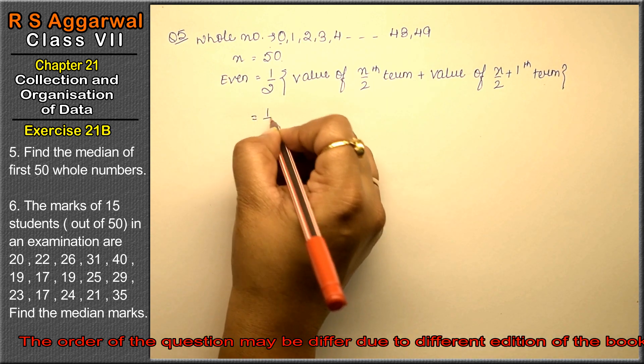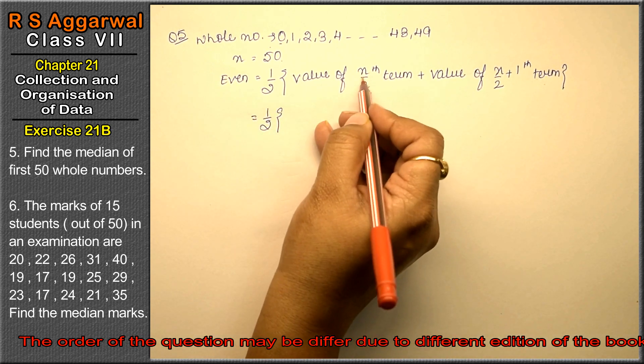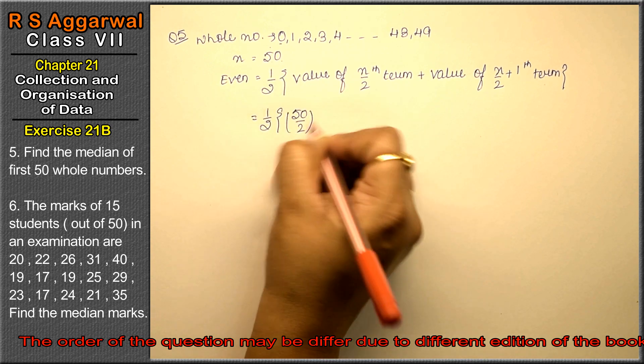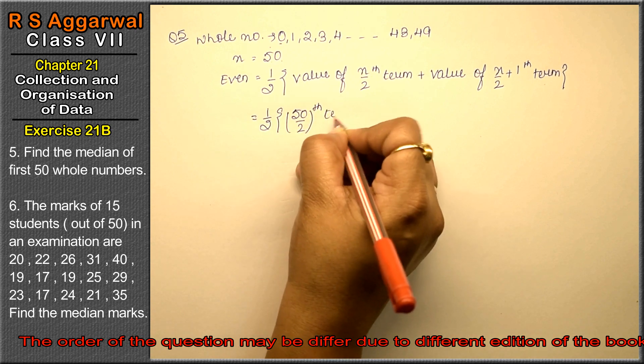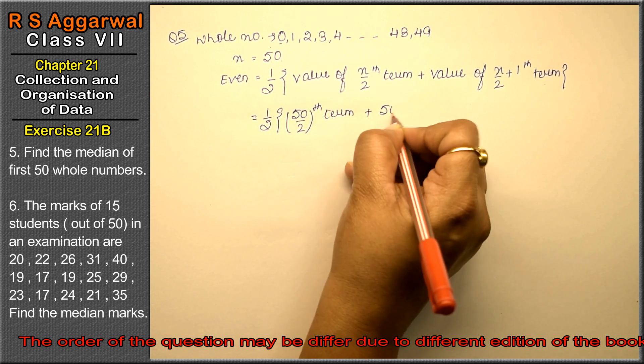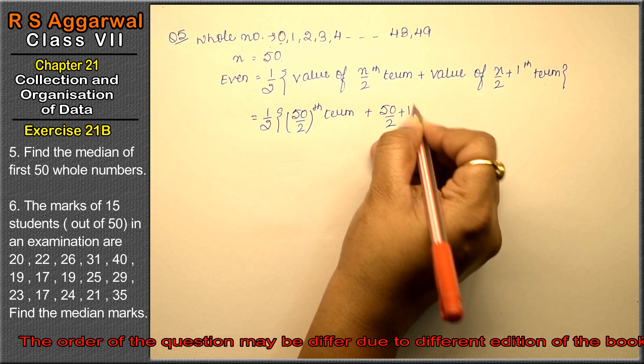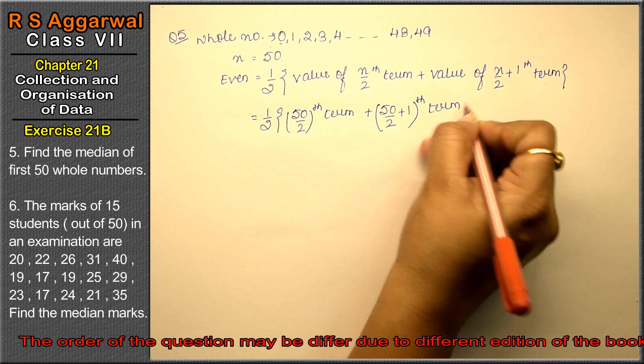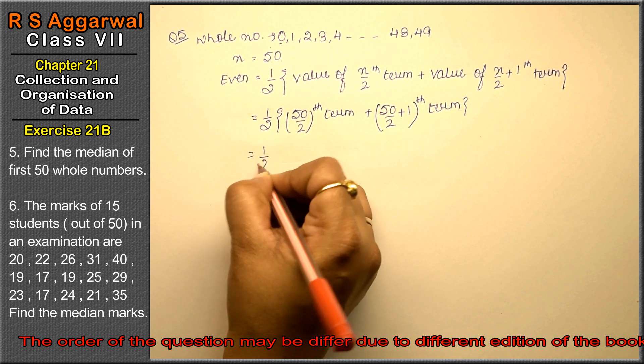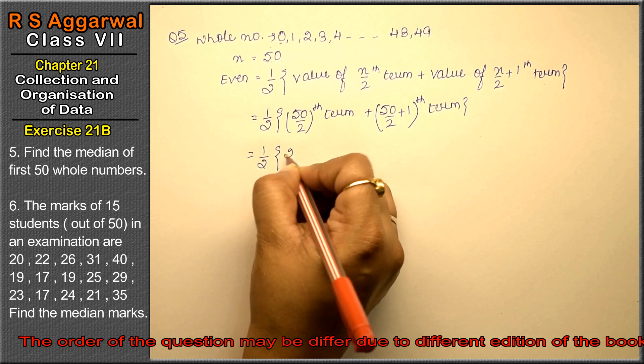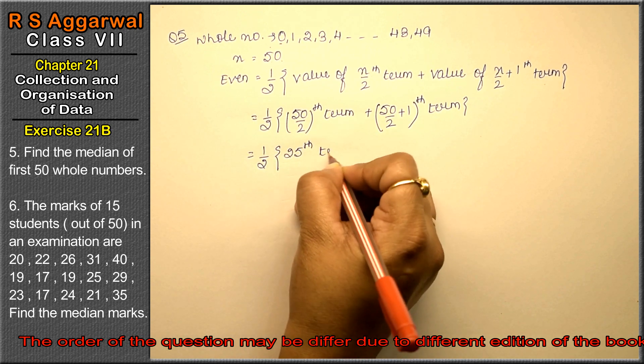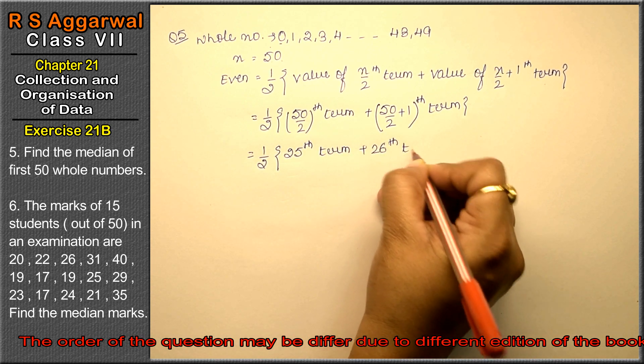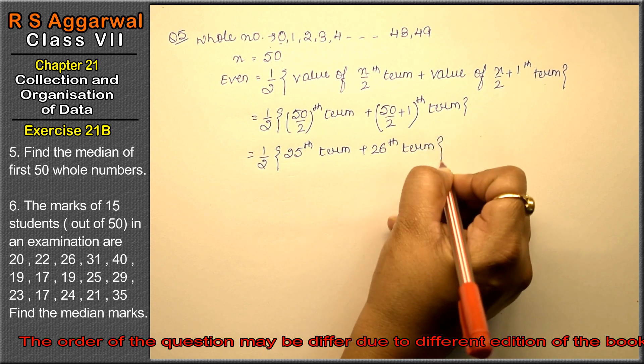So this is half value of n. Then how much was n? 50/2 th term plus (50/2 + 1) th term. Right, friends? So this is half: 25th term plus 26th term. Right, friends?